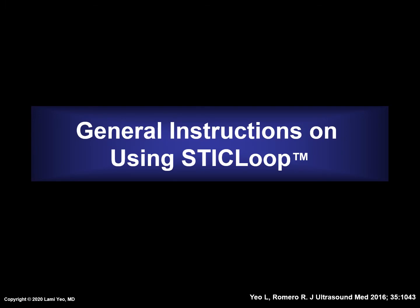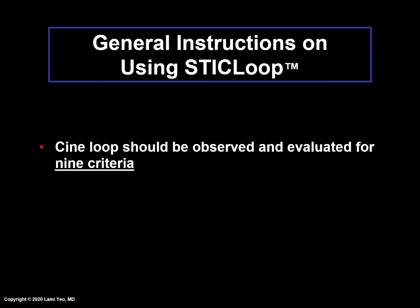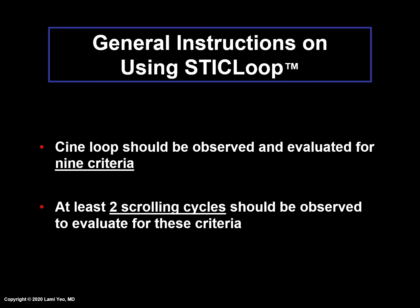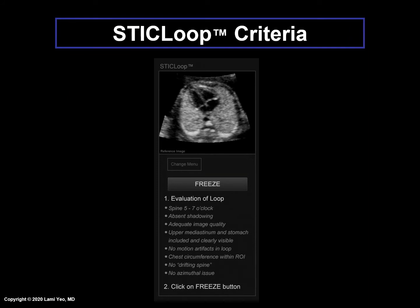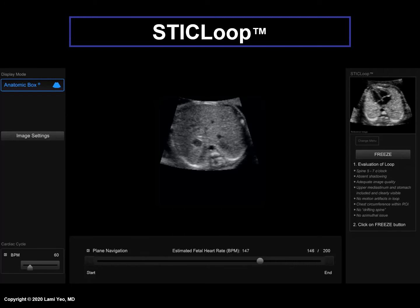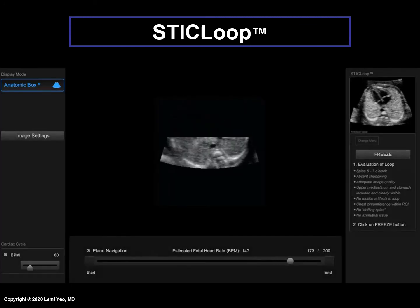We will now review general instructions on using STICLOOP. The CINE loop should be observed and evaluated for nine criteria, which will be reviewed in the next lecture in this series. Remember that STICLOOP is a CINE loop that scrolls in a continuous fashion. We recommend that at least two scrolling cycles should be observed to evaluate for these criteria. The STICLOOP criteria are written in a panel located on the right-hand side of the ultrasound monitor screen, and a reference image of the four-chamber view is also depicted.